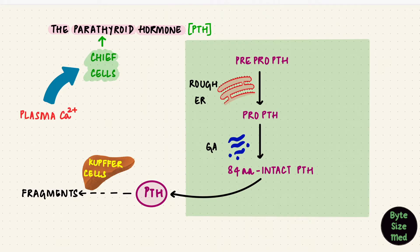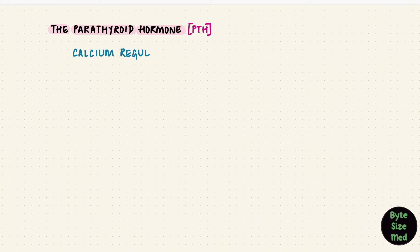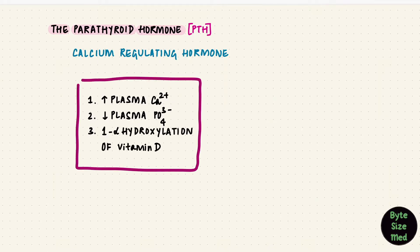But what stimulates these cells to produce PTH? Changes in the plasma calcium levels, because PTH is the main calcium-regulating hormone in the body. Now I could summarize the actions of PTH in just three sentences. It increases plasma calcium, decreases plasma phosphate, and it's needed for 1-alpha-hydroxylation of vitamin D. That's actually all you need to know. But in the rest of this video, we're going to build on that.